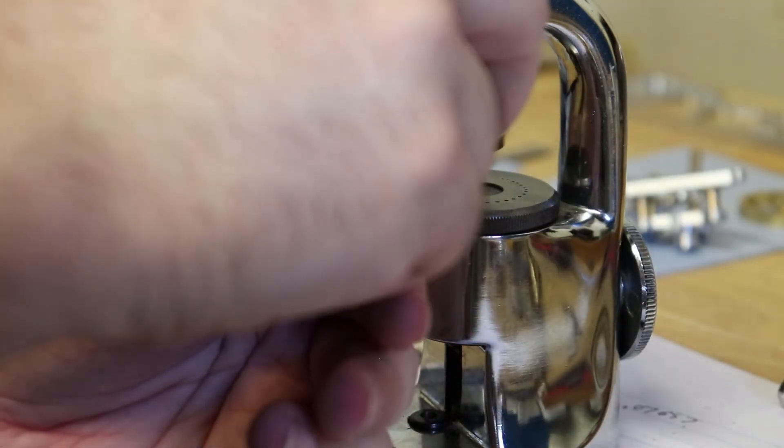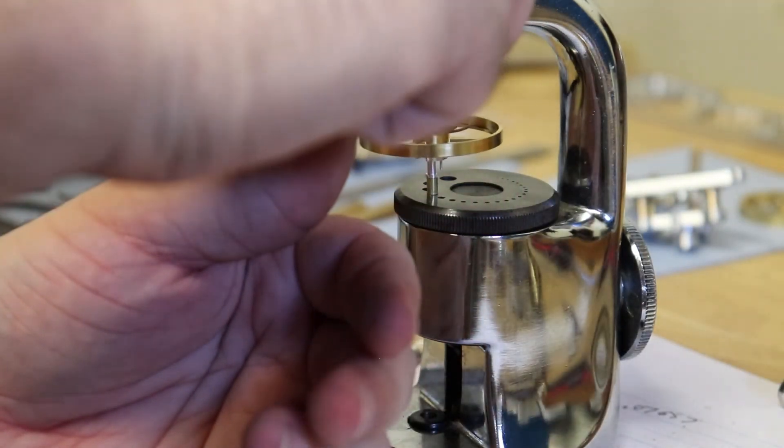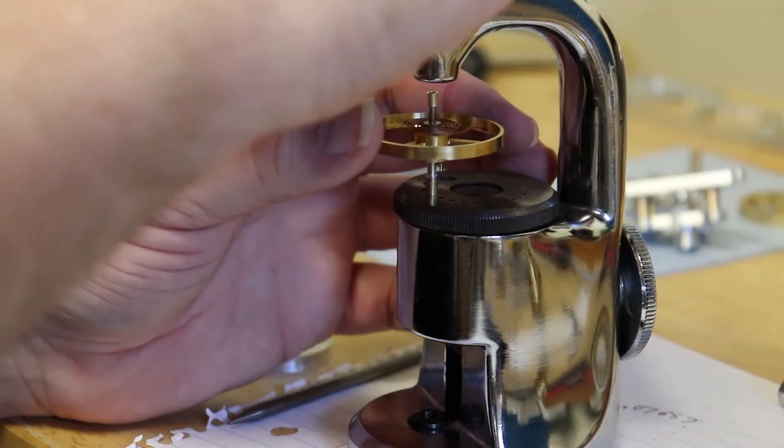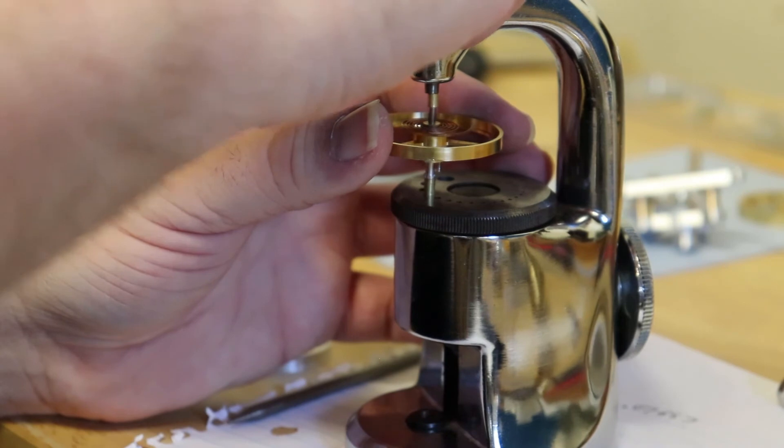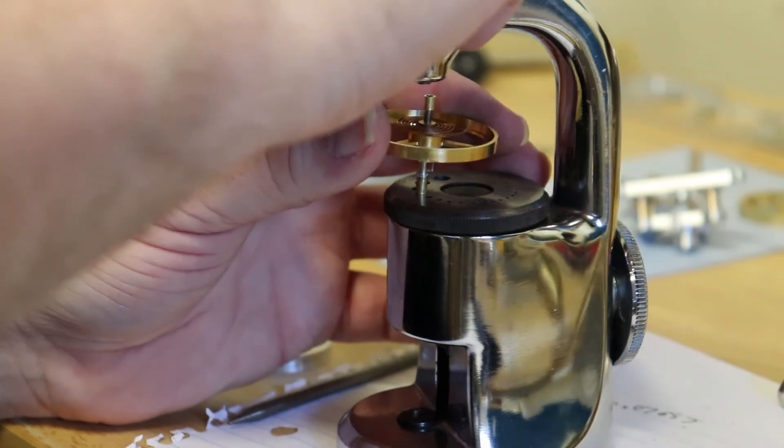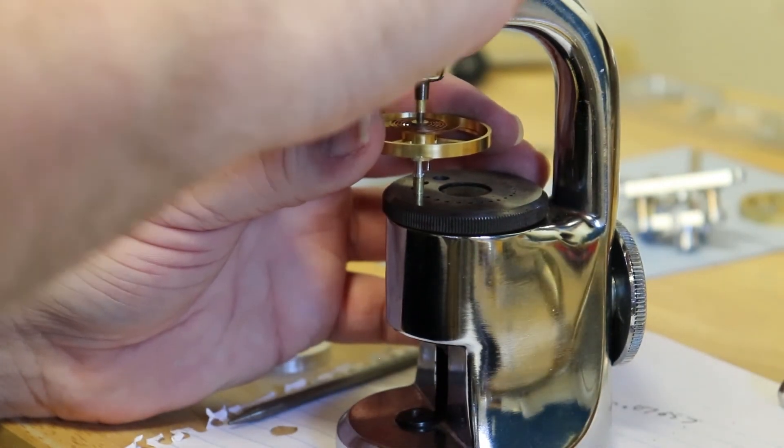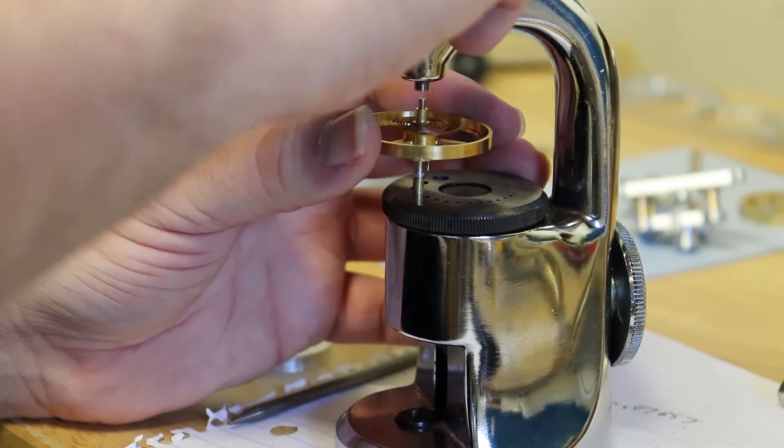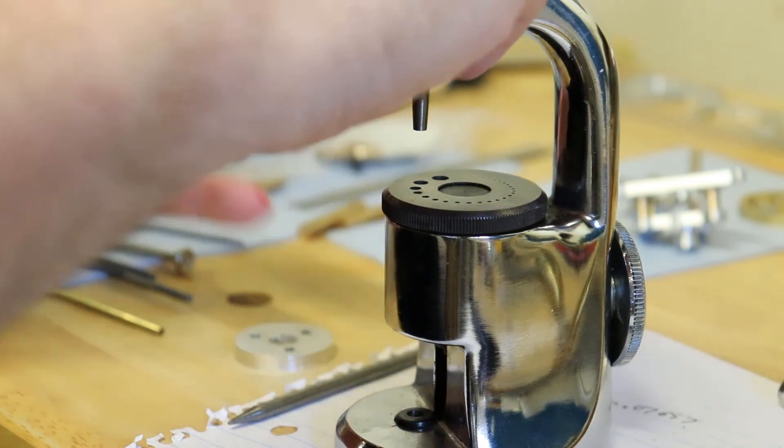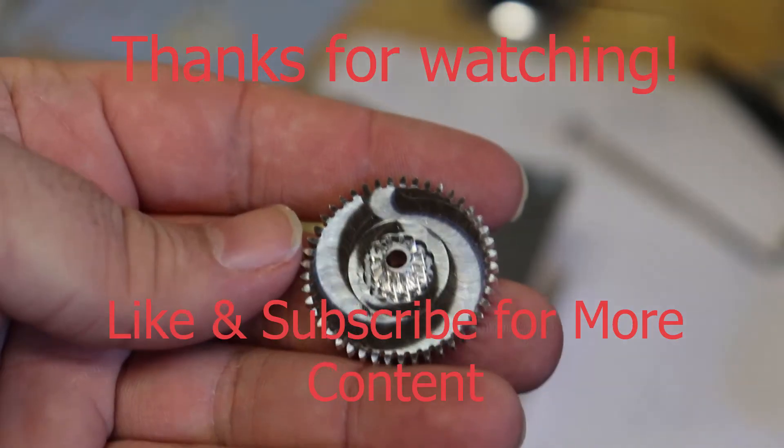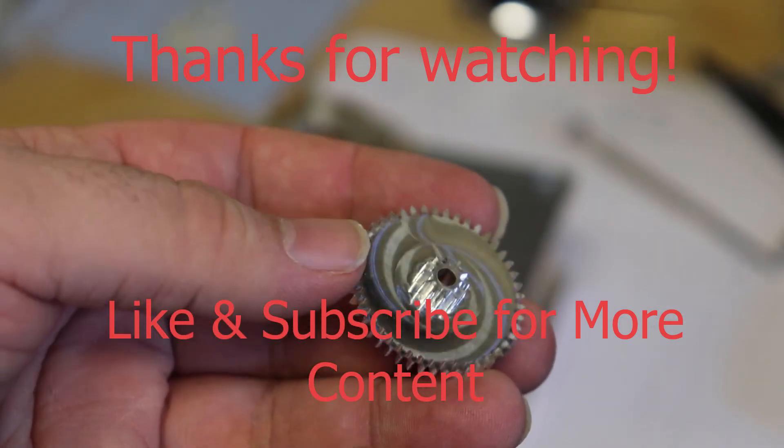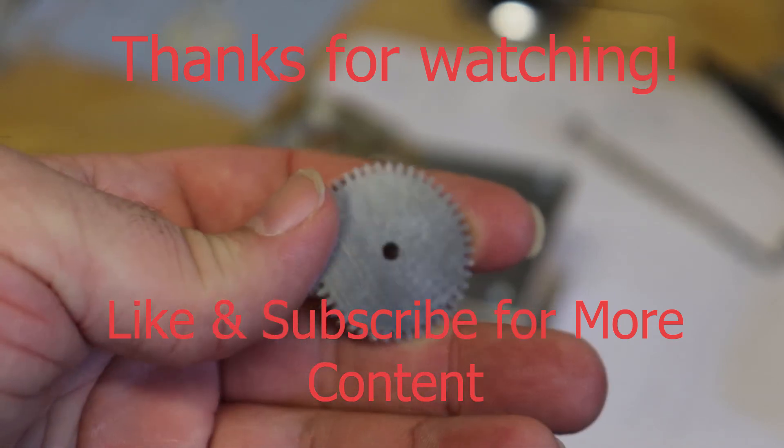Remember that little brass tube we cut earlier? You didn't think I cut that out for fun did you? Now I'm going to use the staking tool to set that on the balance wheel arbor.